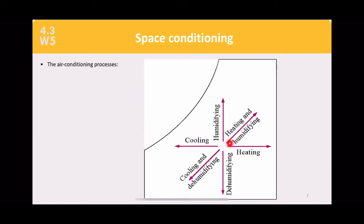Moving diagonally upward-right is heating and humidification — increasing temperature and increasing humidity ratio. Moving diagonally downward-left is cooling and dehumidification — decreasing temperature and decreasing humidity inside that space.